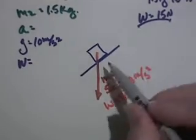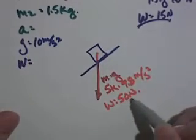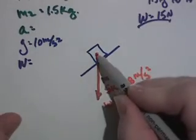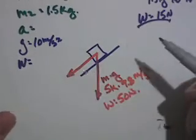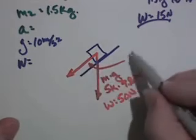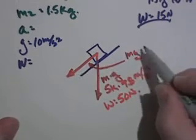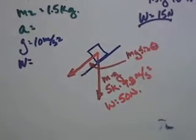But not all of the weight is pulling down on the system. Only this part of the weight is pulling down. And as per a previous discussion, this is Mg sine theta.